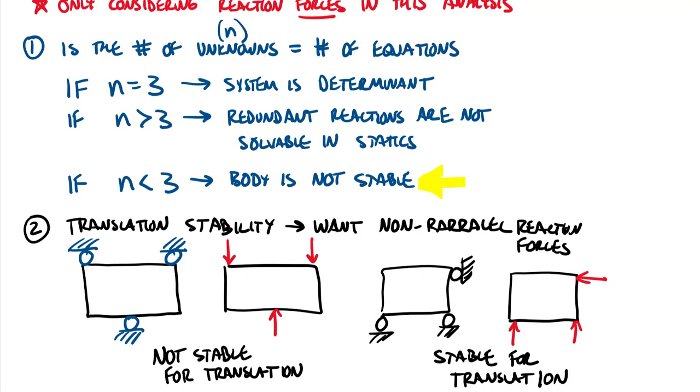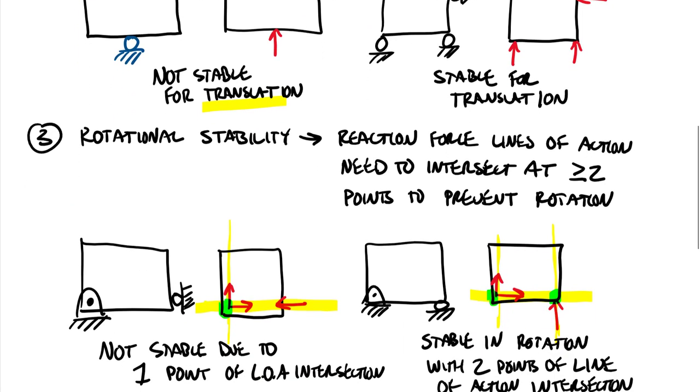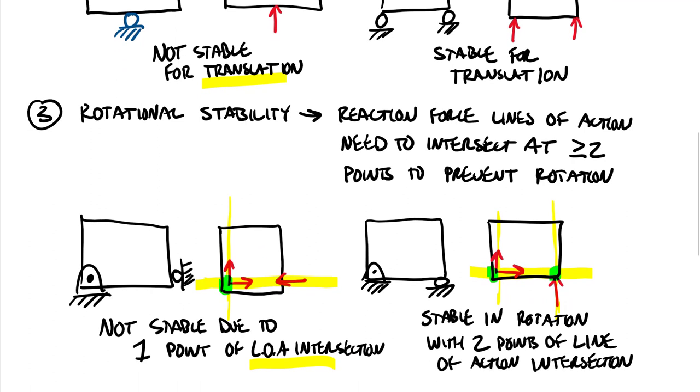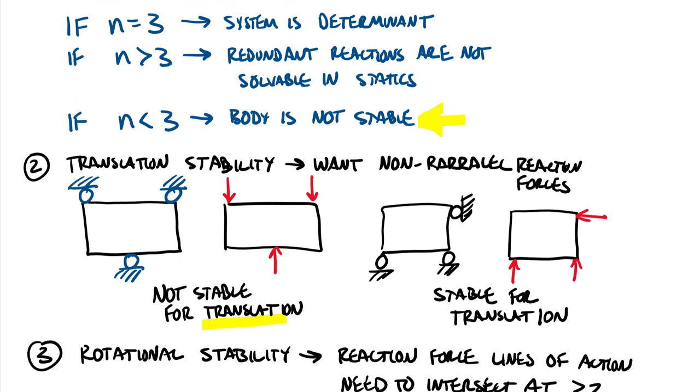Now revisiting the third point here on number one. So this one right here. If there's only two reactions, it's either going to fall into a case where those two reactions are parallel. So if they're parallel, it would be not stable for translation. Or it will fall into the case where those two reactions intersect at only one point, which would fall under this case right here. So not stable due to one point of line of action intersection. Right. And that's true because if you have two lines, these two lines only have two options. They can either be parallel or not parallel. If the two lines lines of action are parallel, then it won't be fixed for translation. If they're not parallel, they're going to intersect somewhere and it wouldn't be fixed or fundamentally it wouldn't be stable under rotation.